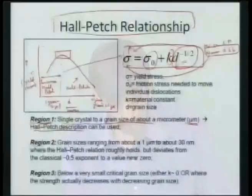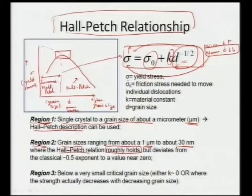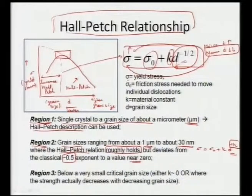As we start decreasing the grain size we will see an increase in yield stress. In Region 2, starting from 1 micrometer to approximately 30 nanometers, the Hall-Petch relationship is approximately or roughly holding, but it deviates from the classical exponent. In this case the exponent of d in σ = σ₀ + k·d^(−1/2) instead of −0.5 comes out to be approximately near 0, meaning the slope is approximately horizontal in this region.